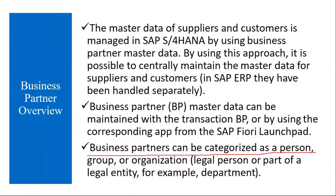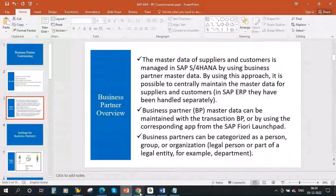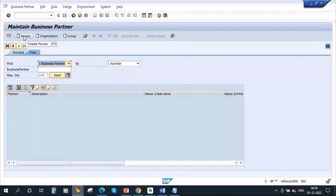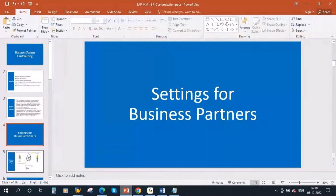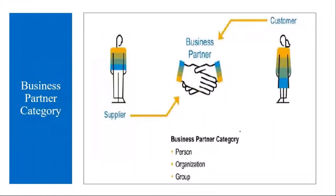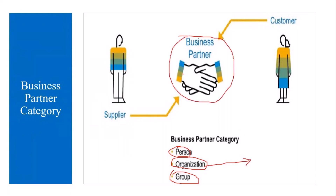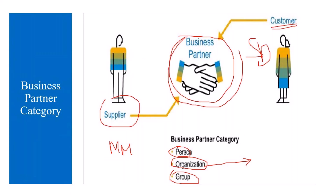Business partners can be categorized as a person, group, or organization. These are the three categories. In the transaction, you can see three categories: person, organization, and group. If you recollect our regular sessions, we created a business partner using the category organization. Business partner is a single transaction used to create suppliers and vendors in purchasing in MM, and also the same transaction is used in sales for customer creation — they have made it a single transaction.